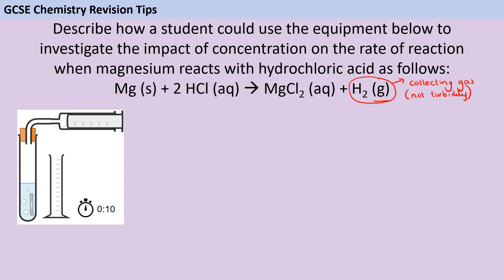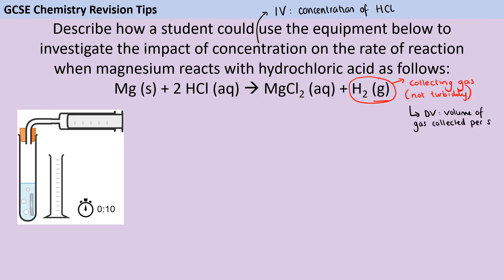In this investigation, the independent variable — the thing we're changing each time — is going to be the concentration of the hydrochloric acid. The dependent variable, which we're measuring to see the impact of changing the independent variable, is going to be the volume of gas being released per second. It's really crucial that in any question where you're trying to calculate rate, you explicitly mention that you're going to time the reaction. If you haven't said you're going to measure the volume of gas per second or per 10 seconds, then you won't get the marks because without timing, you cannot calculate a rate.